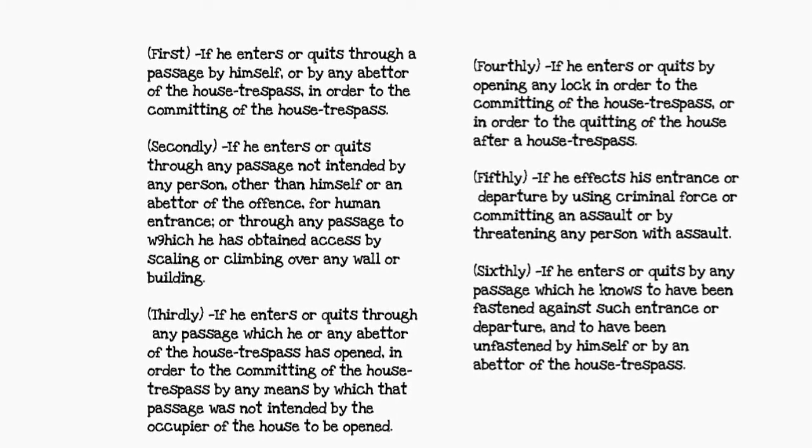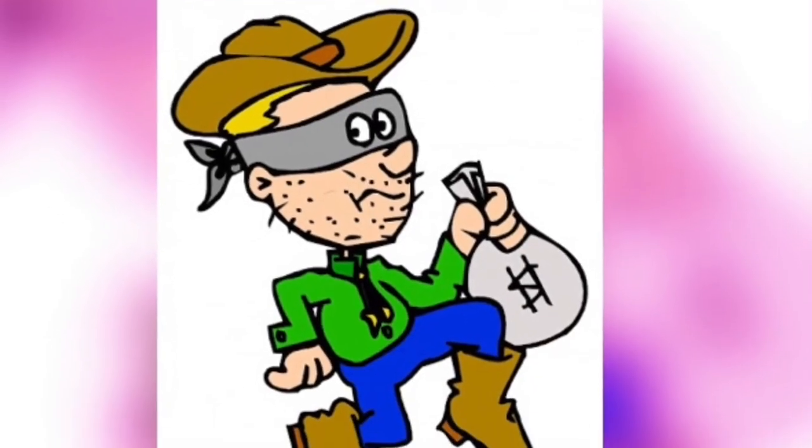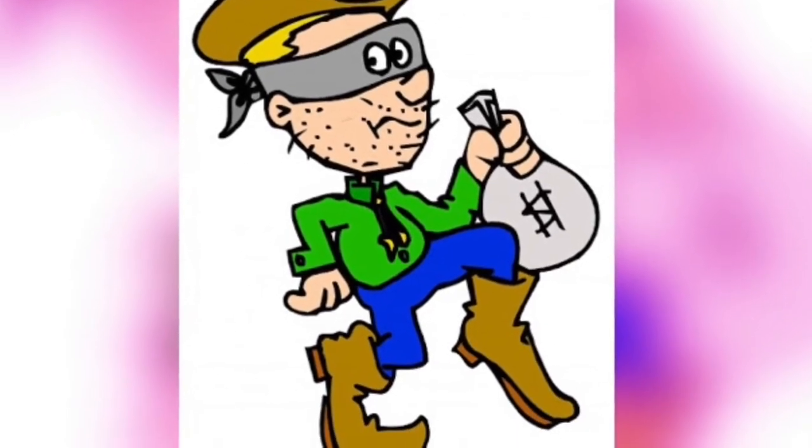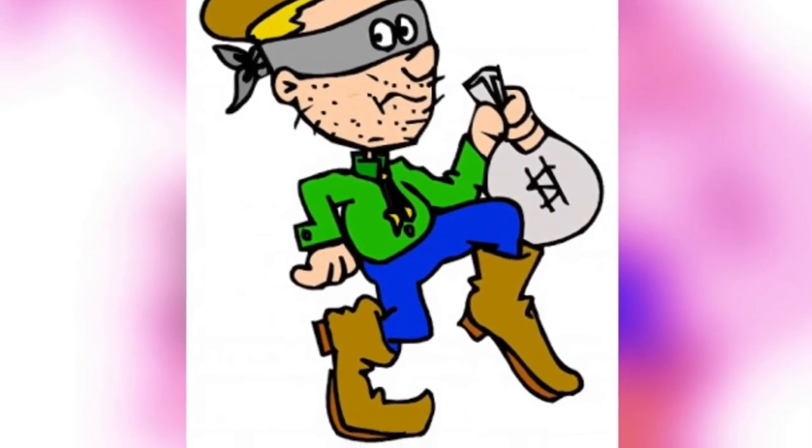Thirdly, if he enters or exits through any passage which he or any abettor of the house trespass has opened in order to commit the house trespass, by any means by which this passage was not intended by the occupier of the house to be opened.